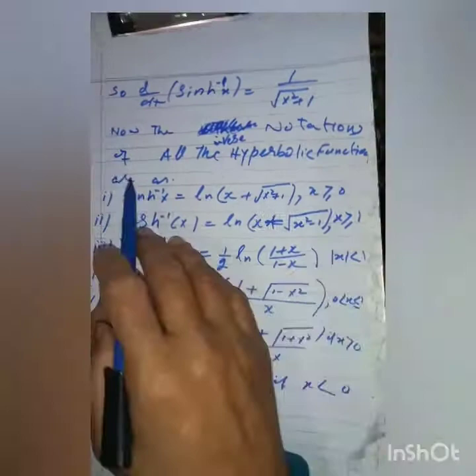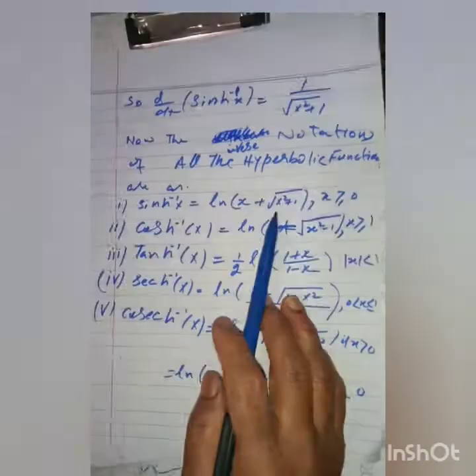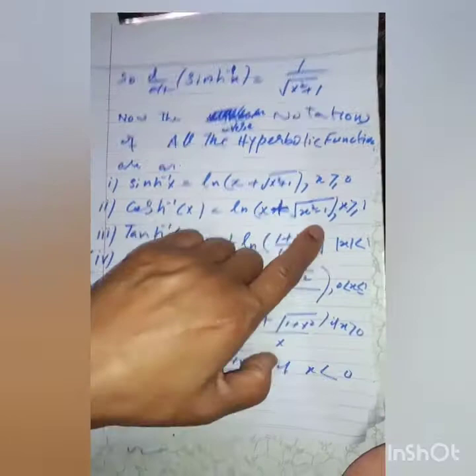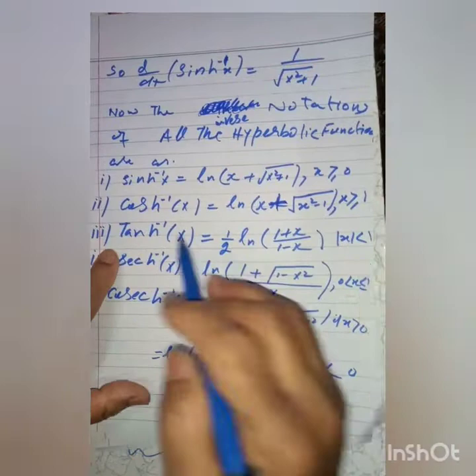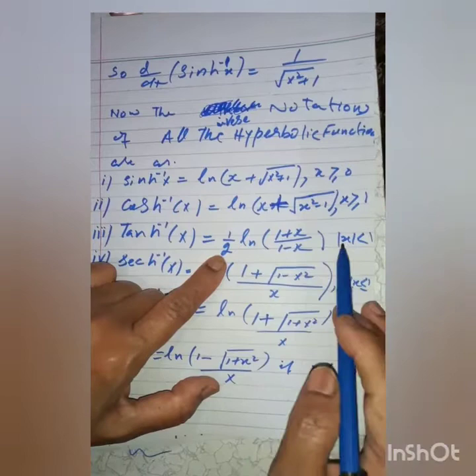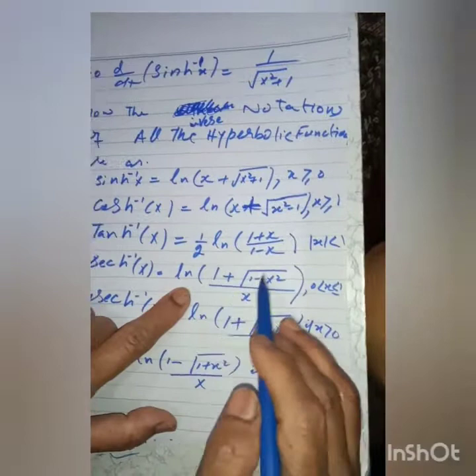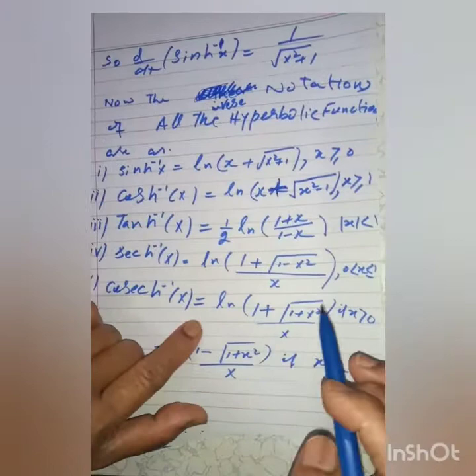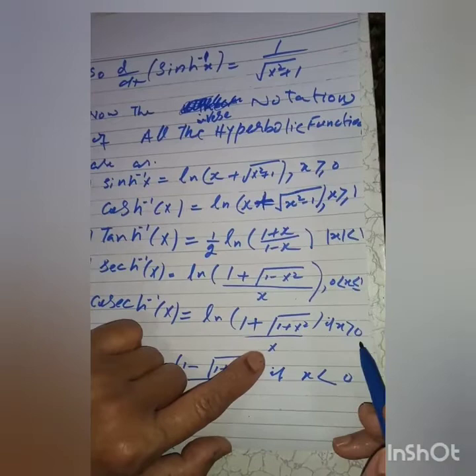The notations of all the inverse hyperbolic functions: sinh inverse x equals log of x plus under root x squared plus 1, where x is greater or equal to 0. Cosh inverse x equals log of x plus under root x squared minus 1, where x is greater or equal to 1. Tanh inverse x equals 1 by 2 into log of 1 plus x dividing by 1 minus x, where mod x is less than 1. Sech inverse x equals log of 1 plus under root 1 minus x squared dividing by x, where 0 is less than or equal to x is less than or equal to 1. Csch inverse x equals log of 1 plus under root 1 plus x squared dividing by x if x is greater than 0, and log of 1 minus under root 1 plus x squared dividing by x if x is less than 0.